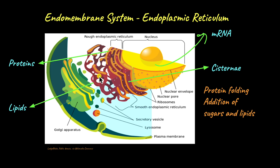This is where vesicles come into the picture. After the protein is modified and reaches the end of the endoplasmic reticulum, it is packed inside vesicles. Vesicles are tiny sacs made of the same phospholipid bilayer membrane as the ER itself, which pinch off or bud off and contain the protein inside. These vesicles then move to the Golgi apparatus, where more modifications are done and the proteins can be sent to their target locations.